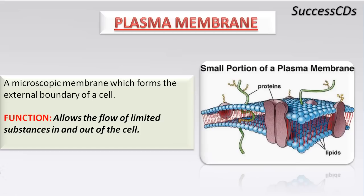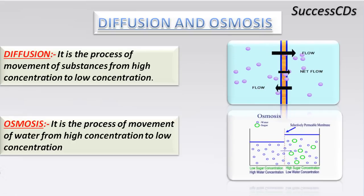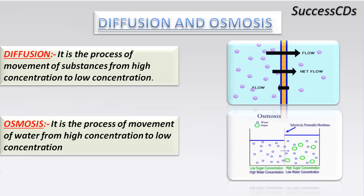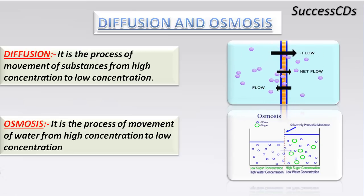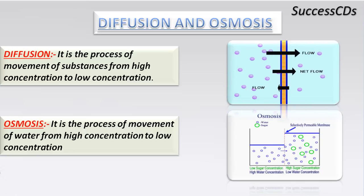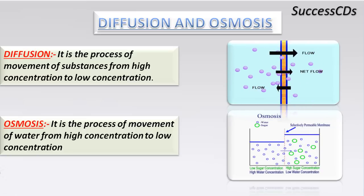The first component of the cell is the plasma membrane, also called the cell membrane. The plasma membrane is a microscopic membrane that forms the external boundary of a cell and protects it from the external environment. Its function is to allow the flow of limited substances in and out of the cell. It is very thin, delicate, elastic, and selectively permeable — meaning it allows only certain substances to enter or exit. Diffusion is the movement of substances such as amino acids, carbohydrates, or lipids from high concentration to low concentration.